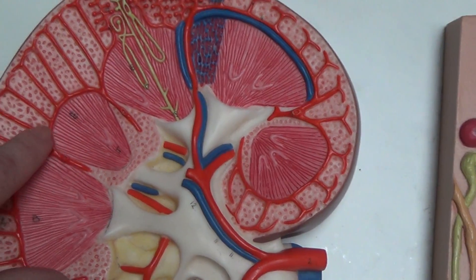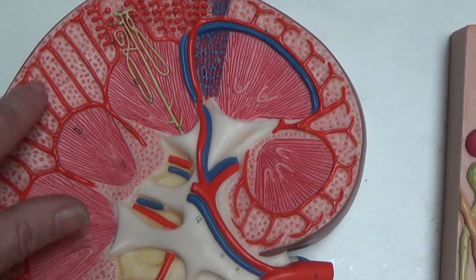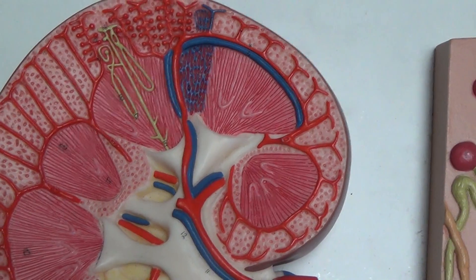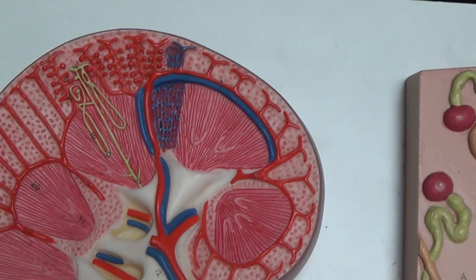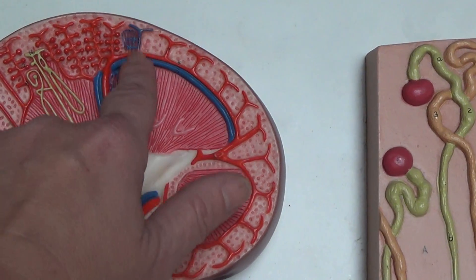And off the arcuate we have several blood vessels that continue up. These blood vessels that continue up are called the cortical radiate arteries and veins, as you can see the veins up here.